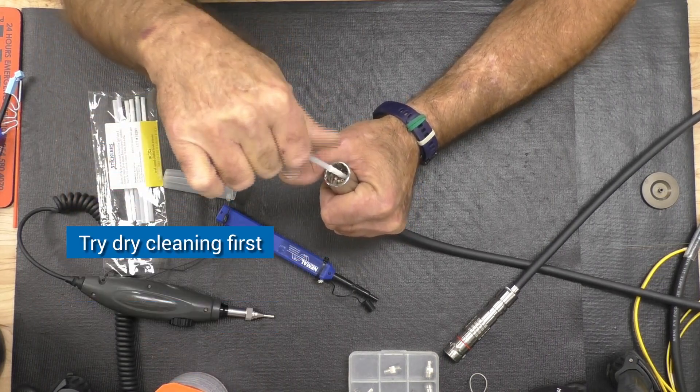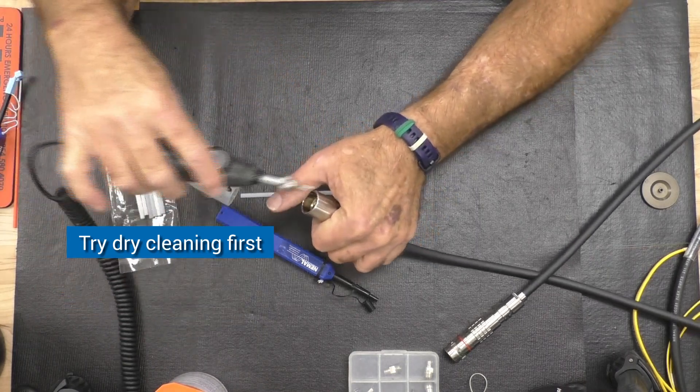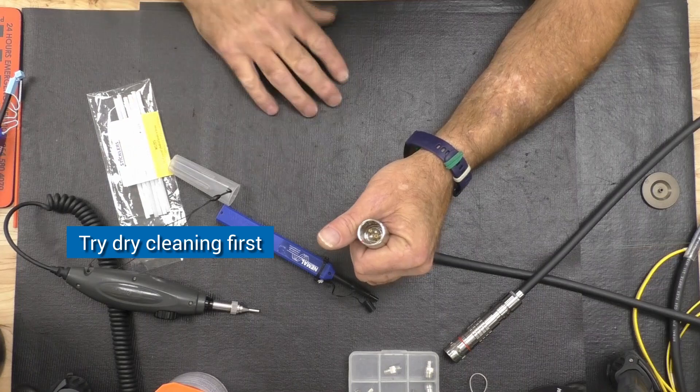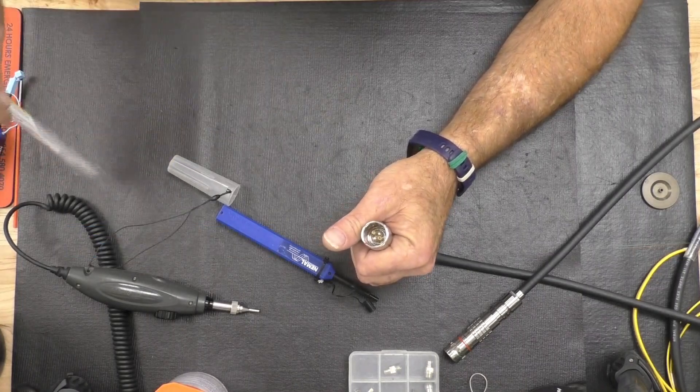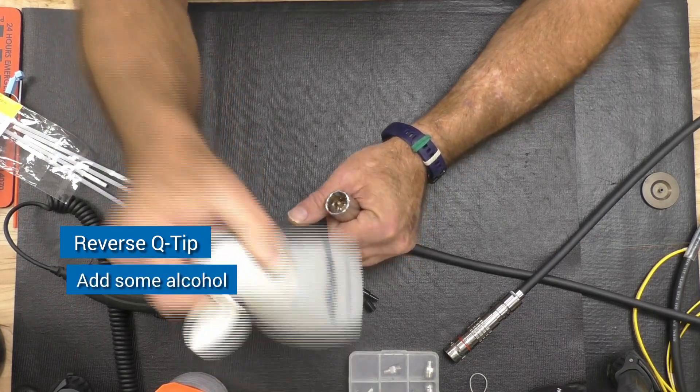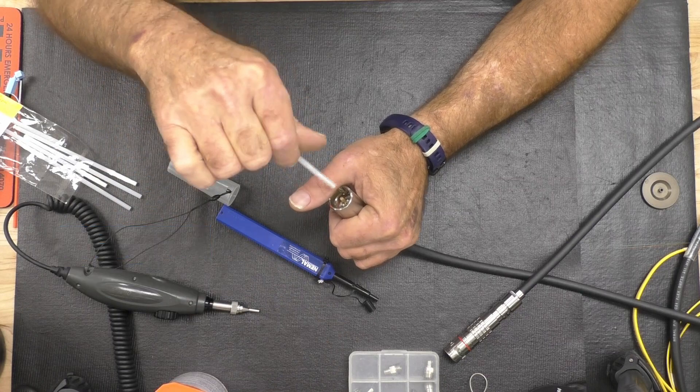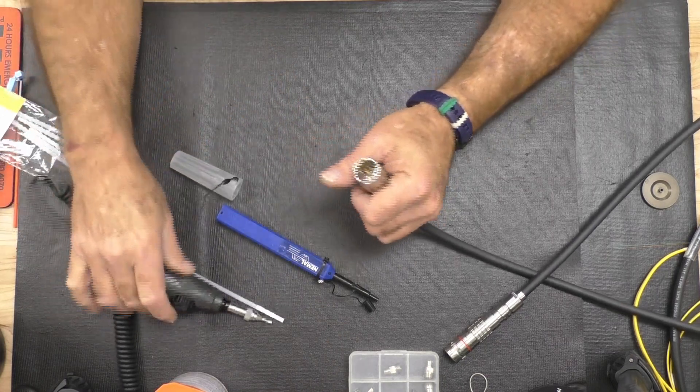Always try dry cleaning first and see if it achieves the results you intended. Visually inspect them. If necessary, use the tip cleaner, adding a little bit of alcohol, and again applying it in one direction, rotating. Then visually inspect.